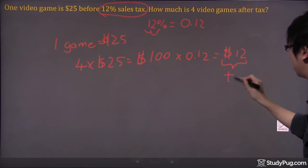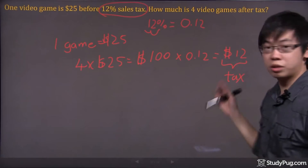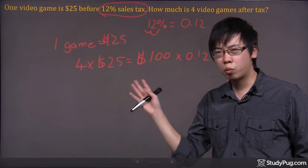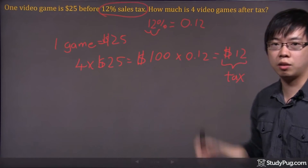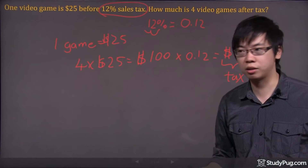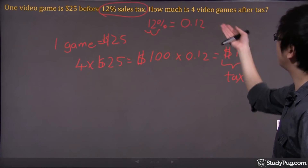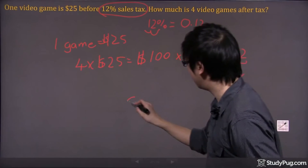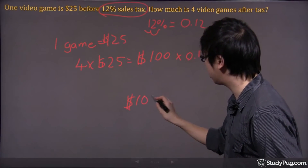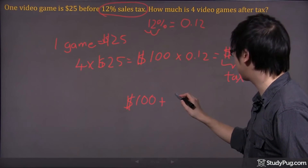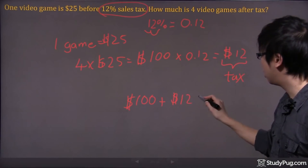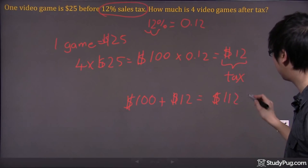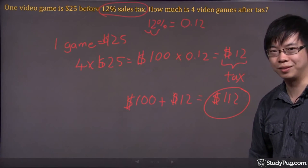This $12 is your tax. You bought $100 worth of video games and you had to pay $12 for the tax. So how much are the four video games after tax? Well, it's simple. There's your video games — $100 — plus the tax you're paying, that's $12. The total would be just $112. And that's your final answer right there.